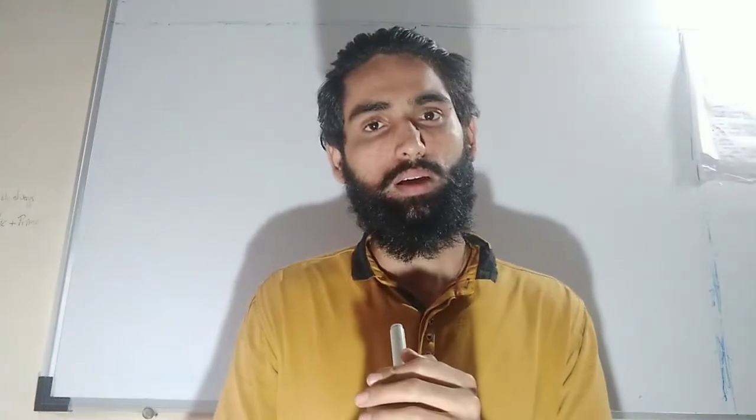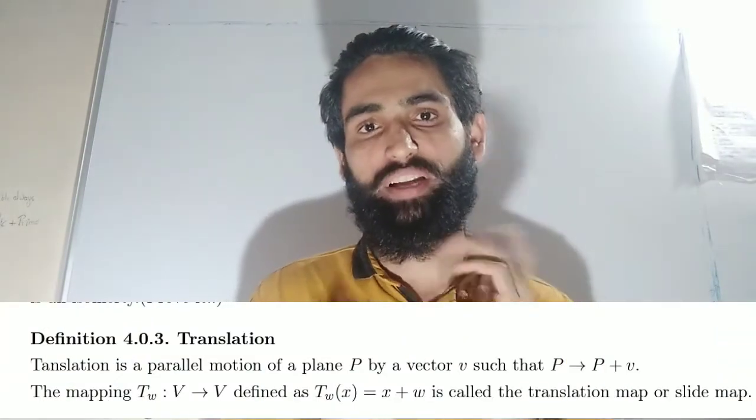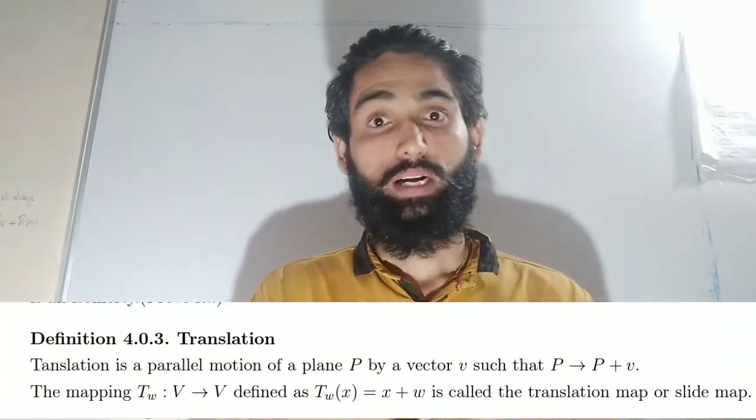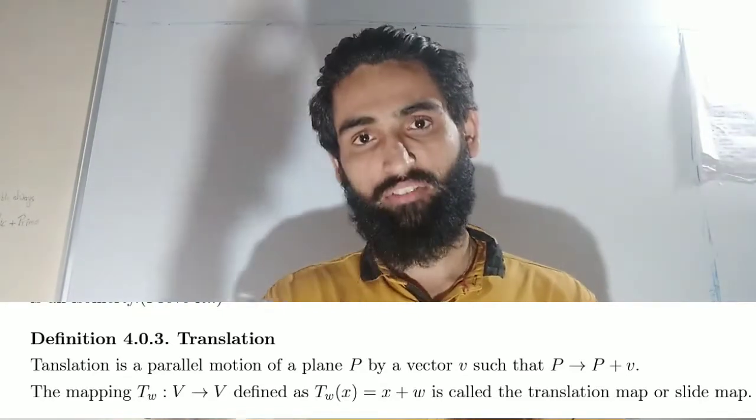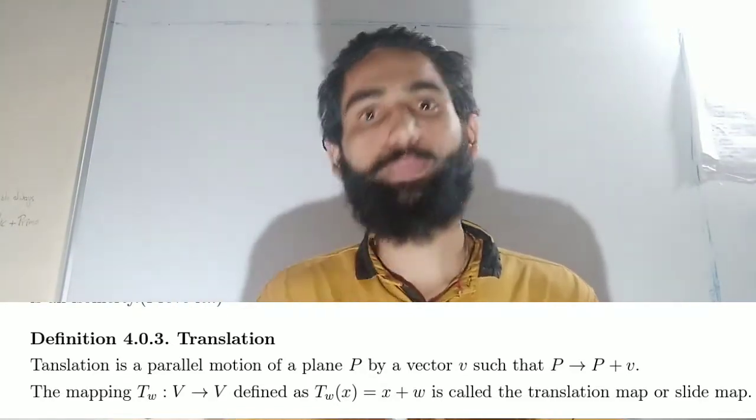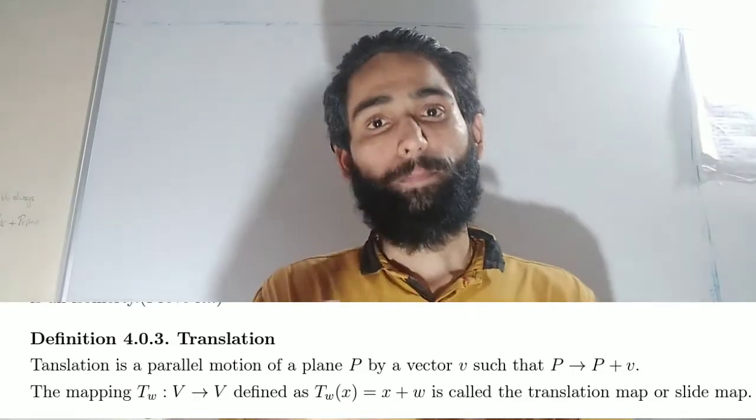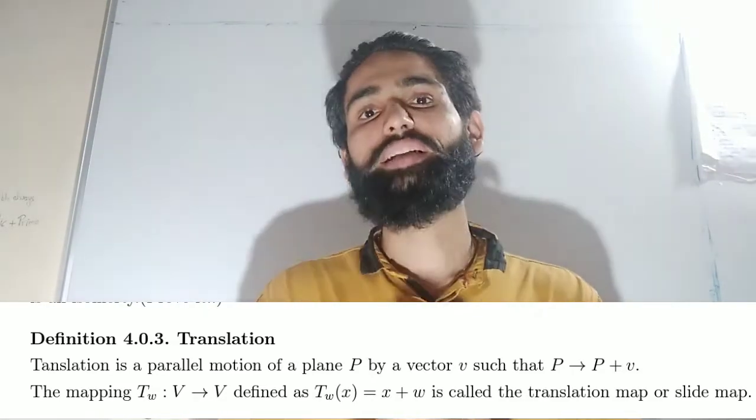Hello friends, welcome to the suite. In this video we will define a few maps and try to see a relation between a new map and the maps we have already learned. The new map is nothing but a translation map, also known as a slide map. So what is a translation map? Given any plane p, a translation of p by a vector v is nothing but p plus v — that means we add the vector v to every element of p.